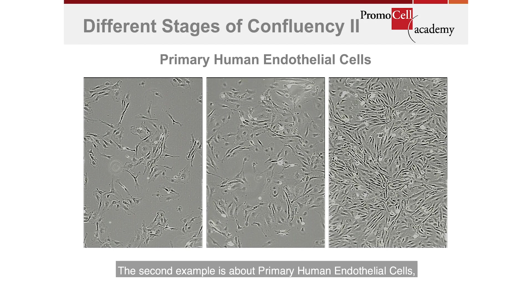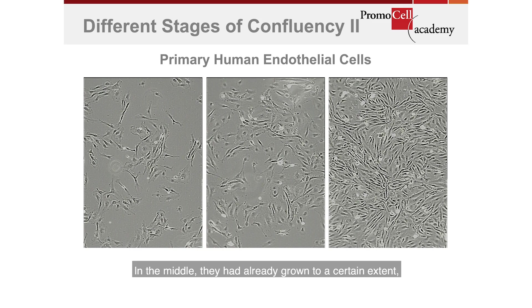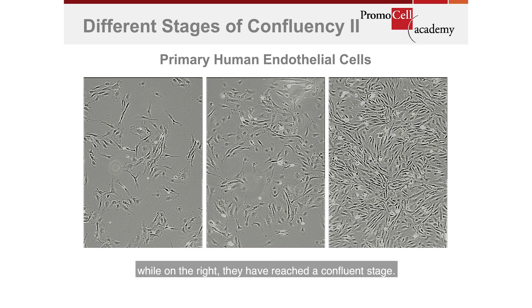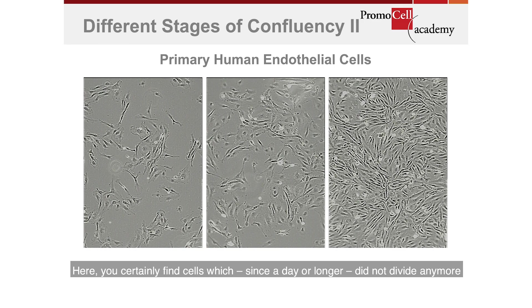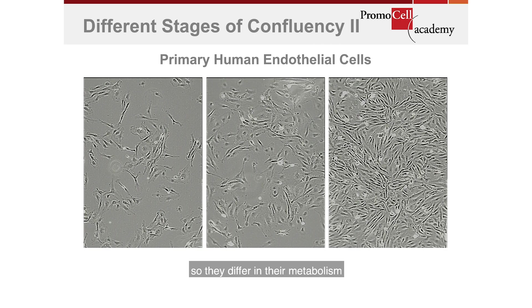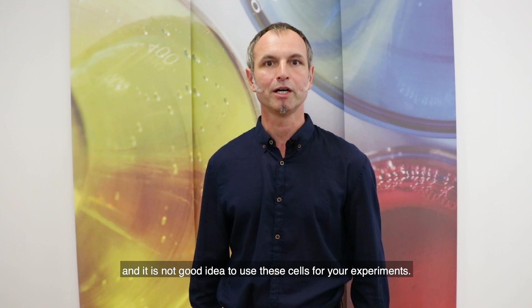The second example shows primary human epithelial cells: on the left side at seeding density, in the middle at around 70–80% confluency, and on the right at a confluent stage. In the confluent stage, cells may not have divided for a day or longer, so their metabolism differs, and it is not a good idea to use these cells directly for an experiment.